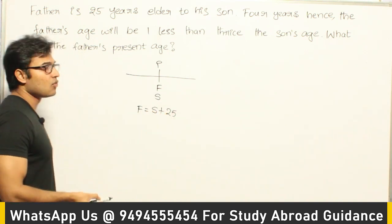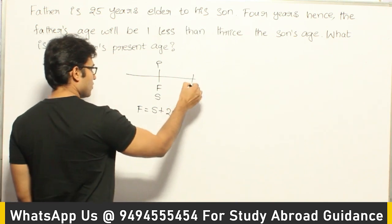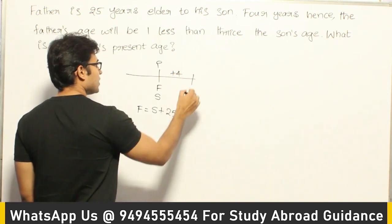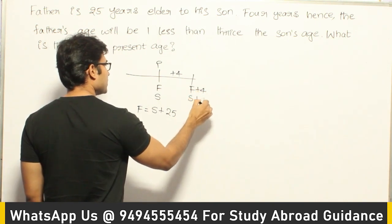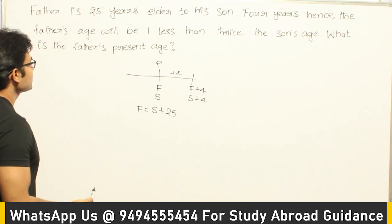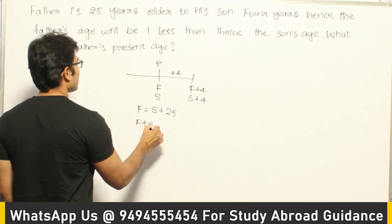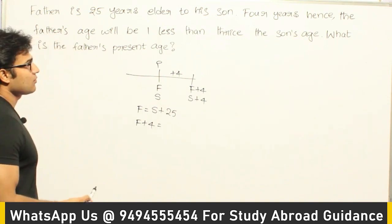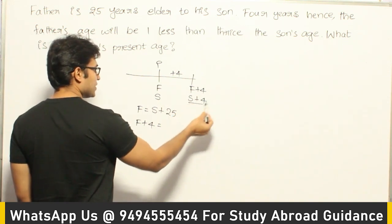That is the meaning of the first statement. 4 years hence means after 4 years, father's age will be F plus 4 and son's age will be S plus 4. They are saying that 4 years hence the father's age — which means F plus 4 — will be one less than thrice of son's age.